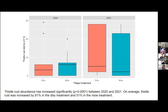In 2021 data, we see a higher level of symptomatically infected Canada thistle stems when there is a higher density of Canada thistle overall. This pathogen is most successful where there are high populations of Canada thistle, because there's an abundance of hosts and a higher opportunity to transmit spores to new hosts. Thistle rust has increased by 61% in the disc treatment and by 51% in the mowing treatment between 2020 and 2021.